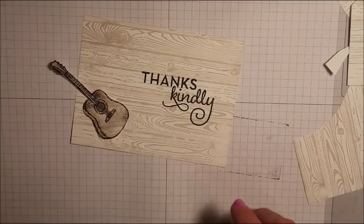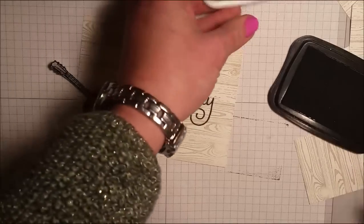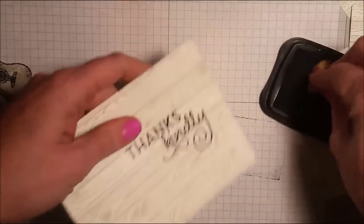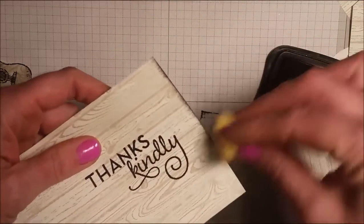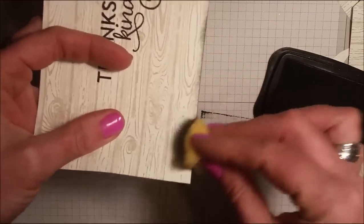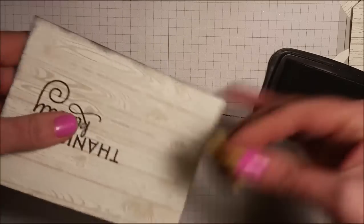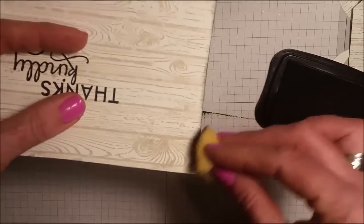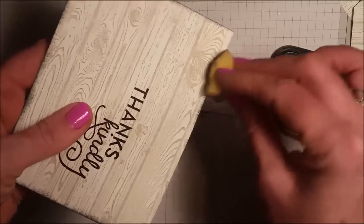Now the next thing I'm going to do is take my black memento ink and a stamping sponge and sponge the edges of my card. I'm not using the stays on because it dries so fast. I just like the memento ink for the sponging. You could use our tribal ink or our basic black ink.